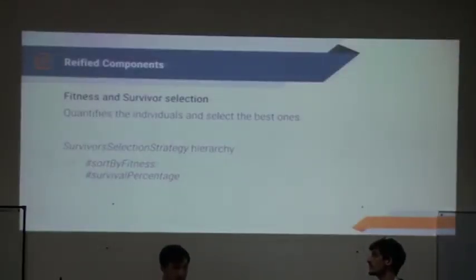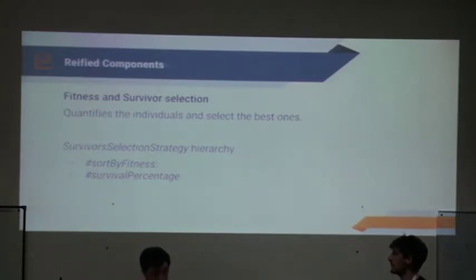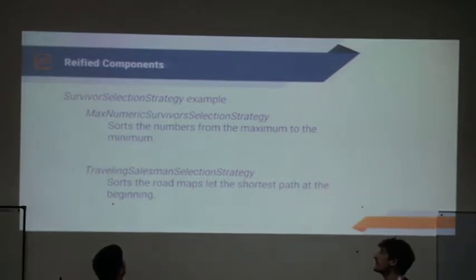The third component is fitness and survival selection. Fitness quantifies the individuals, and survival selection selects the best ones from the previous step. It's defined in a class called survival selection strategy. In the examples, we have two classes. Numeric survival selection strategy sorts the individuals from the maximum to the minimum, and the second class, traveling selection strategy, sorts the roadmaps to let the shortest path at the beginning.